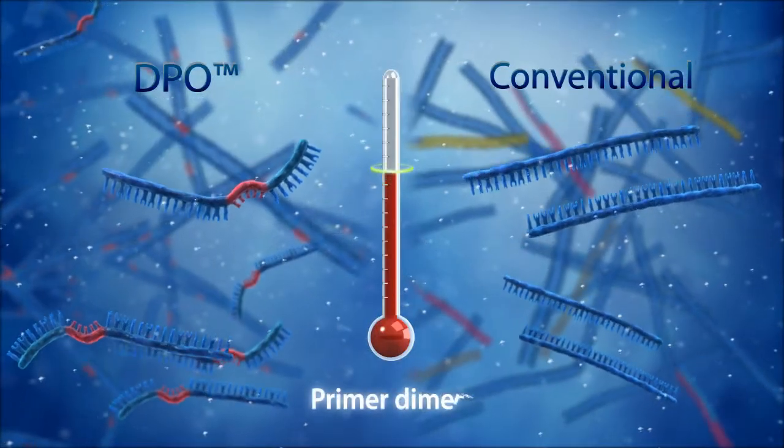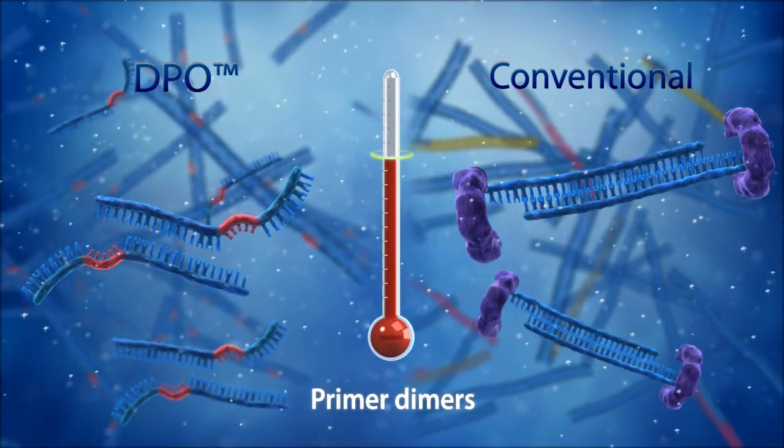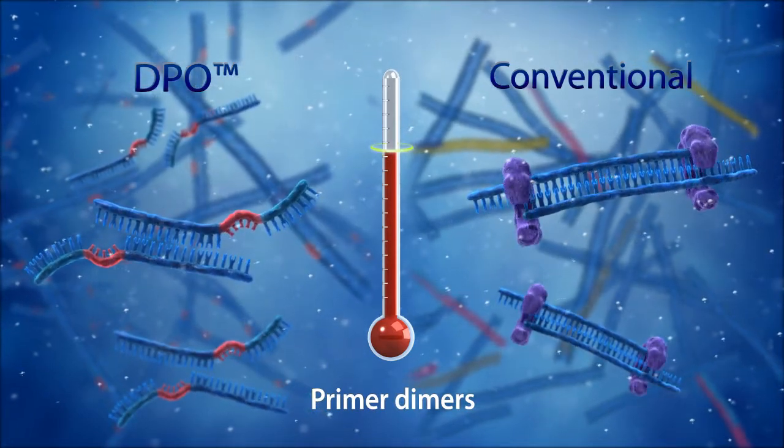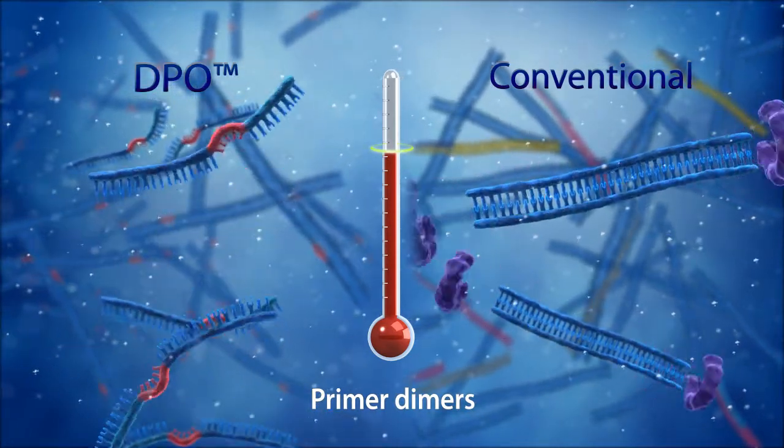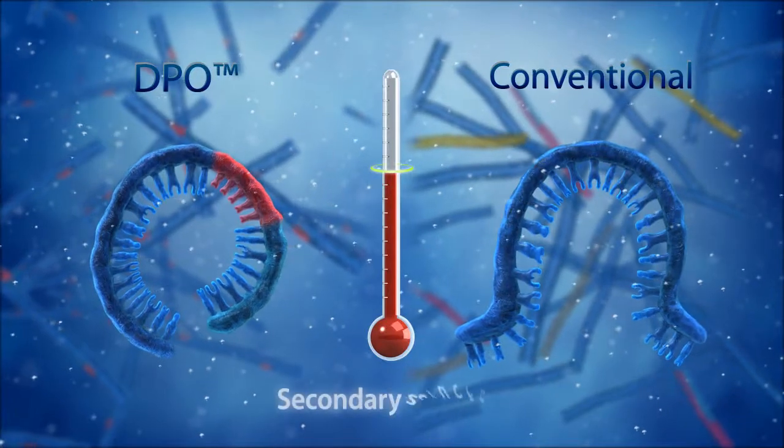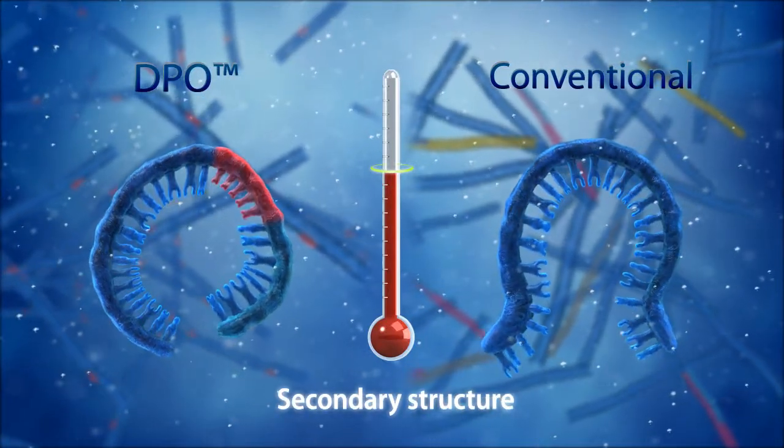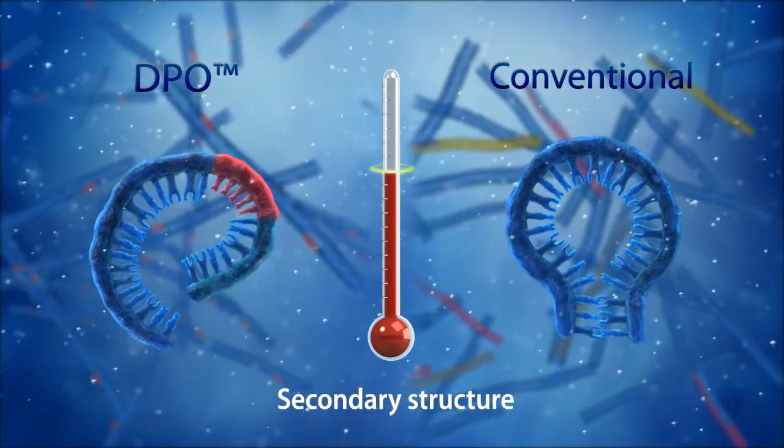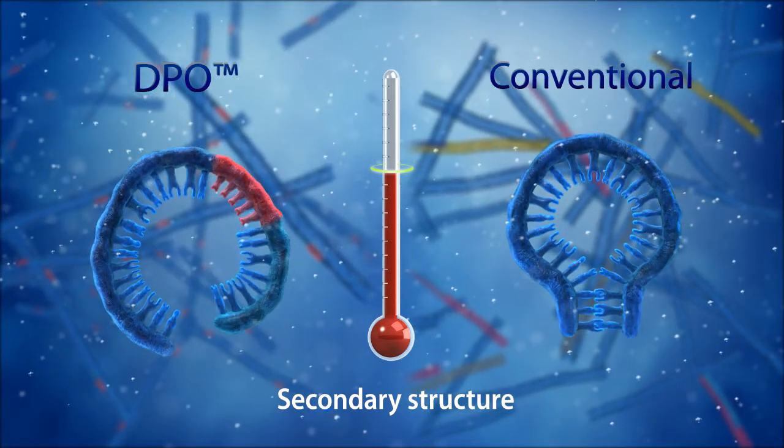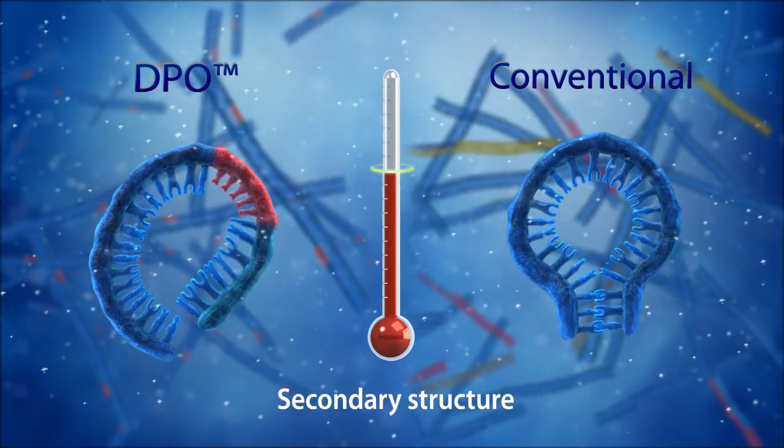Other barriers of multiplex PCR are primer dimerization and secondary structures that interfere with the ability of the primer to bind to its target region. DPO primers fundamentally cannot form dimers and complex secondary structures, allowing DPO primers to perform outstandingly in multiplex reactions.